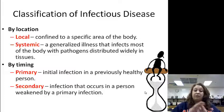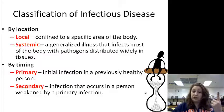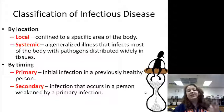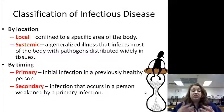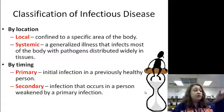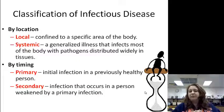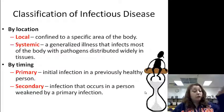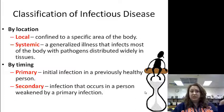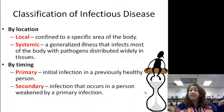In terms of timing, you can have a primary infection, which is the very first infection, or a secondary infection, which occurs in a person already weakened by a primary infection. For example, say you have mono — mono weakens the immune system. Mono would be your primary infection, and then since your immune system is low, you also get strep throat on top of it. Your strep throat would be your secondary infection.